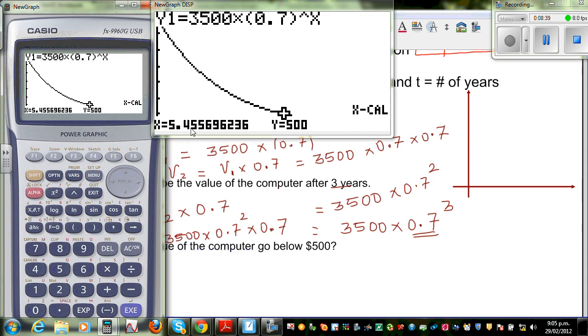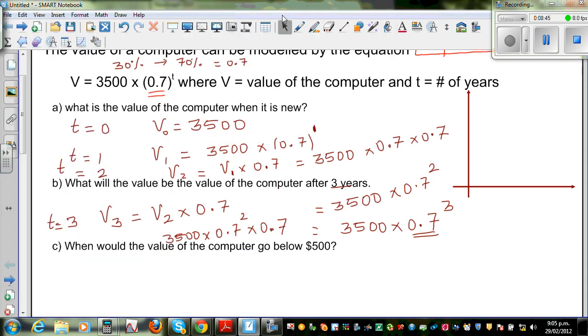it becomes exactly 500 at 5.455 years. Now this is, use your logic, this is closest to 5 and a half year or 5.5 years. So here I can tell the answer, after 5 and a half years, I'll only write after 5 and a half years,